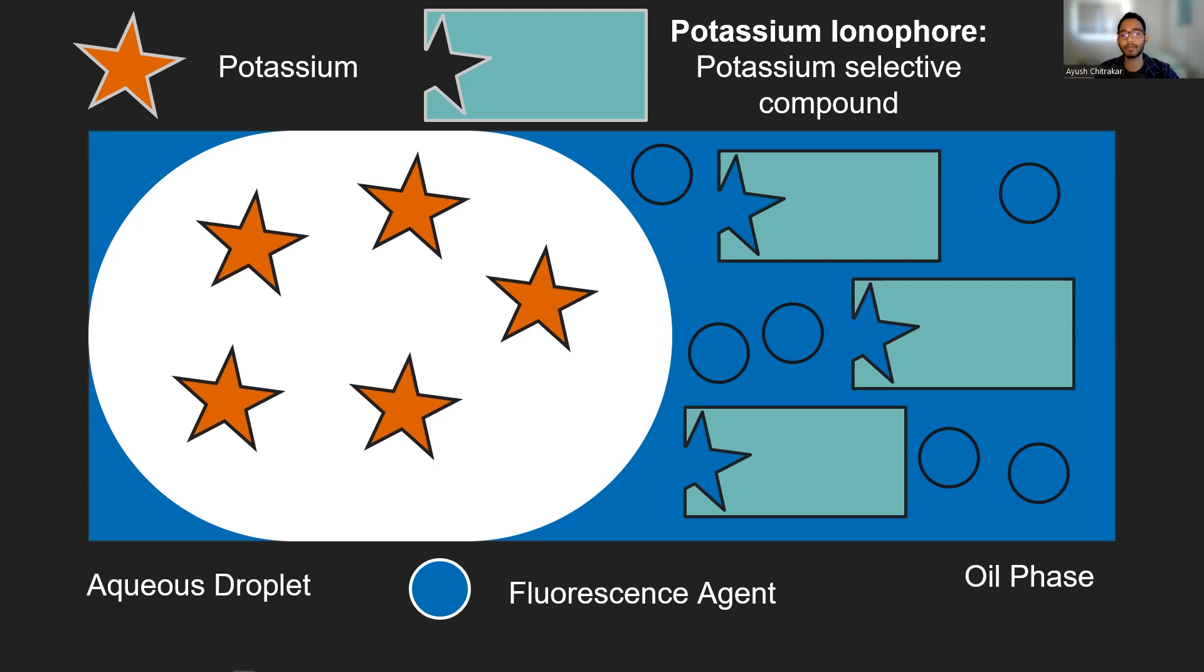To do this, we developed a potassium selective oil. Our oil has two main components: a chemical that's able to bind to only potassium, the potassium ionophore, and a chemical that is able to fluoresce, a fluorescent agent.